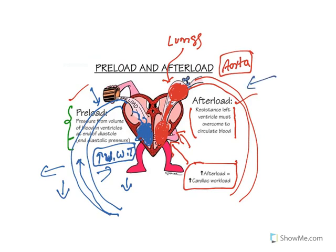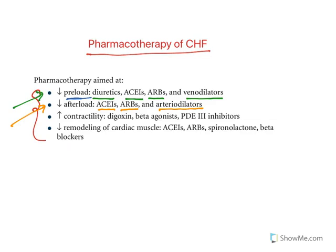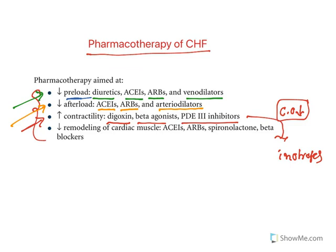Afterload is related to arteries. If you dilate arteries, the aortic pressure reduces. If aortic pressure is reduced, the workload on the left ventricle reduces — you are saving the left ventricular muscle walls. The next goal is to increase contractility. Cardiac output is reduced in congestive heart failure; you need to increase it so that perfusion increases. For this, inotropic agents are used — digoxin, a cardiac glycoside, beta agonists, and PDE3 inhibitors. The final goal is to reduce or delay cardiac remodeling, achieved by ACE inhibitors, angiotensin receptor blockers, spironolactone, and beta blockers. In today's class we will focus on inotropic agents.